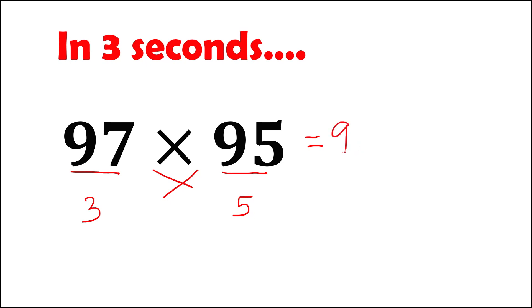So the first two digits is 92. Then the last two digits, just multiply these two numbers. We have 3 times 5, so this one is 15. Therefore, this 97 times 95 is equal to 9,215.